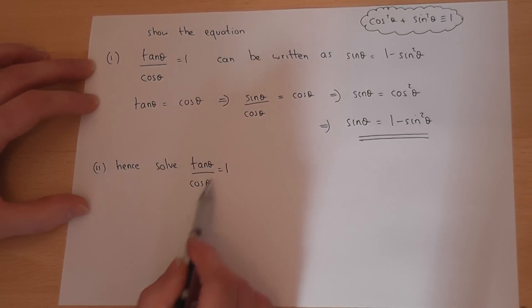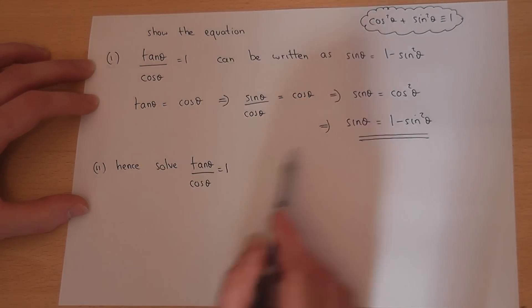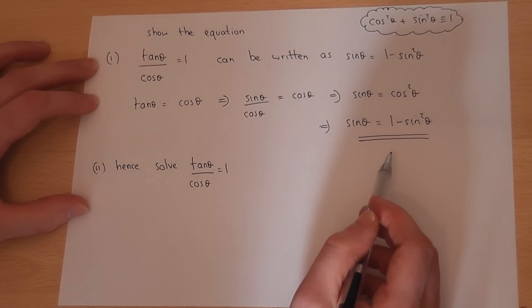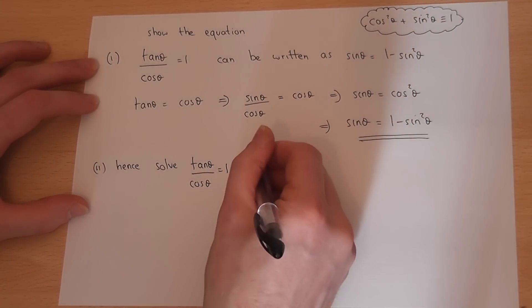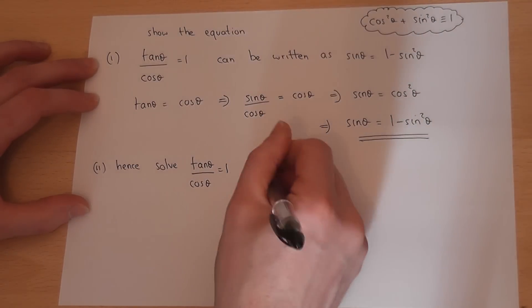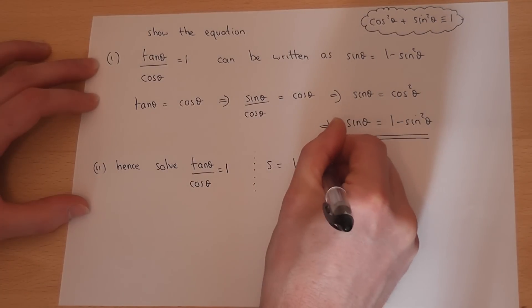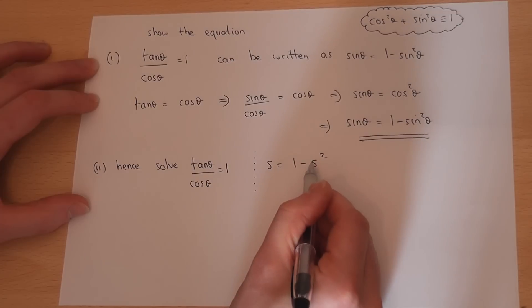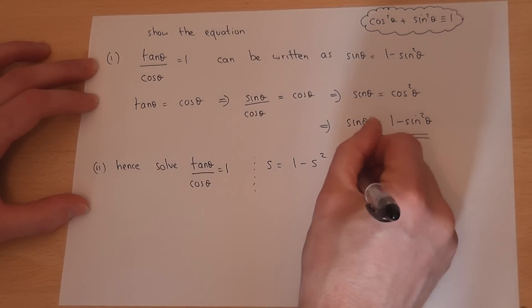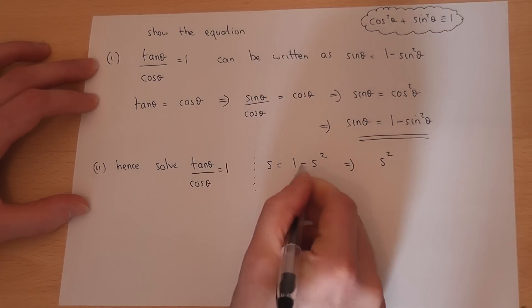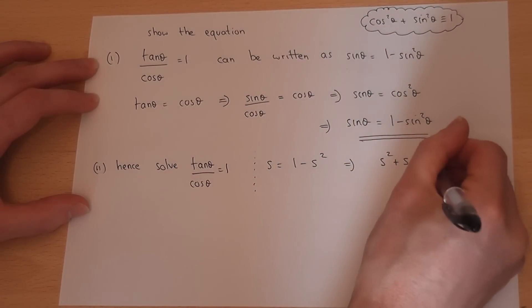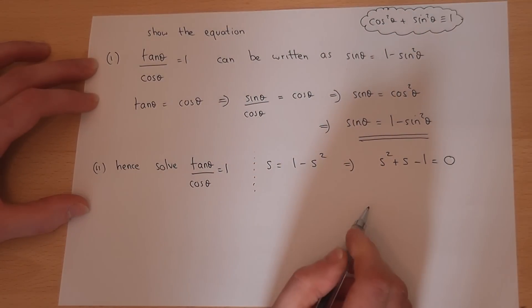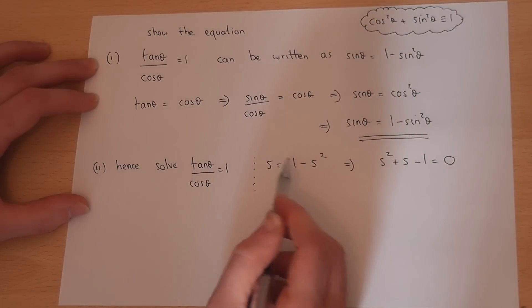So to solve this equation, it's the same as solving this equation. What I do is I replace sine by an s. So s equals 1 minus s squared. It becomes a quadratic equation. So I will rearrange that to get it equal to 0. I will add across the s squared. There was an s there already, and I will take away the 1. So my equation is s squared plus s minus 1 equals 0.